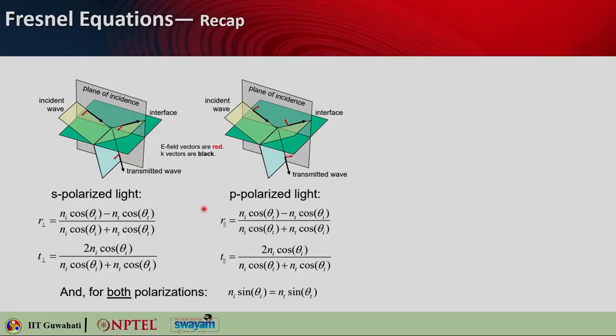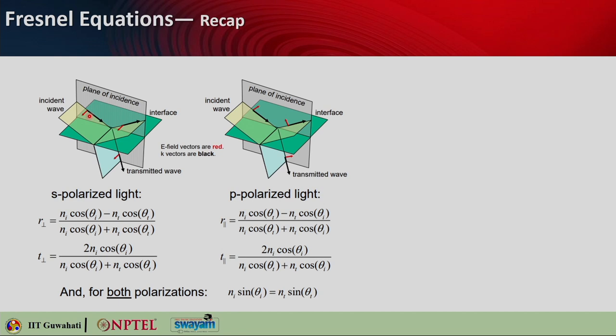Here is a quick recap of Fresnel's equations. If you remember from the last few lectures, we discussed light falling on an interface between two different media. Some portion gets reflected and some gets transmitted. Depending on the polarization state of the incident light, the amount of reflection or transmission will vary. For S-polarized light, the electric field is perpendicular to the plane of incidence — the plane where the incident ray, the normal to the interface, and the reflected ray all lie.